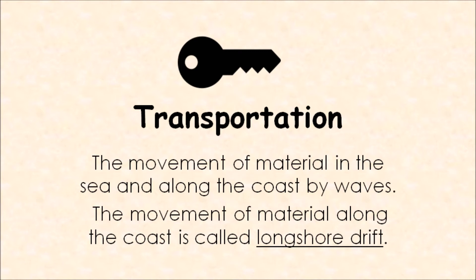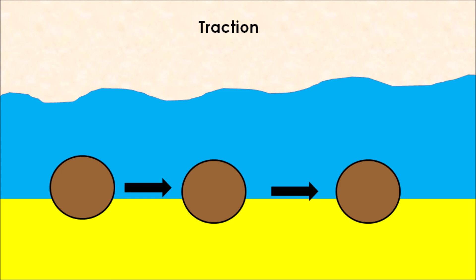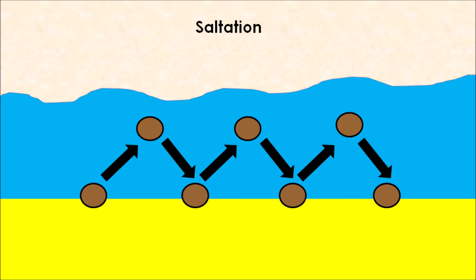That summarizes longshore drift. Although it is the main process of transportation on coastlines, there are four other ways material is moved. First, we have traction — this is when large particles like boulders are pushed along the seabed by the force of the water. These particles are extremely heavy, so the waves do not have enough energy to pick them up; they are simply pushed along the seabed.